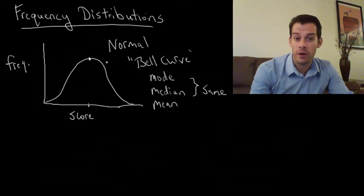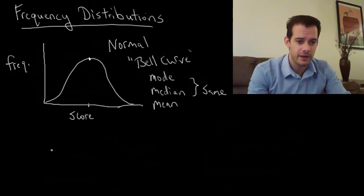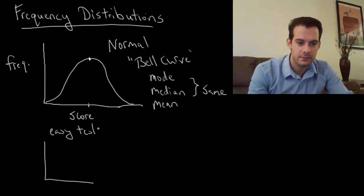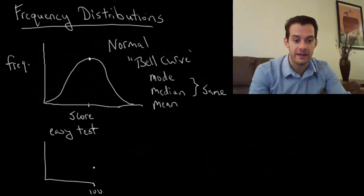And we'll talk more about what a normal curve means when we look at intelligence. But of course all of our data isn't going to fall into a normal curve. Let's take an example that you were taking a test in school. And let's say that this was an easy test. So what's our data going to look like if we have an easy test? Well let's say this is the maximum score here, the 100 on the test.